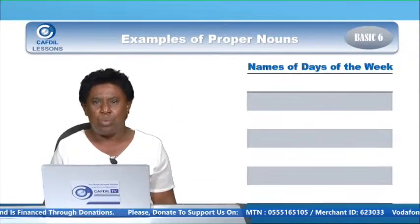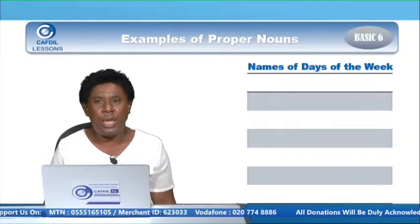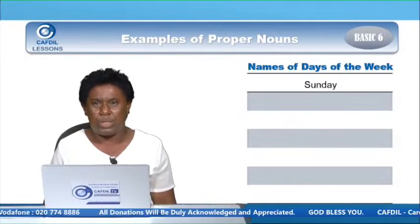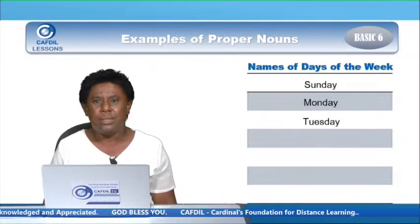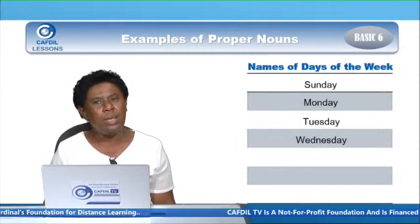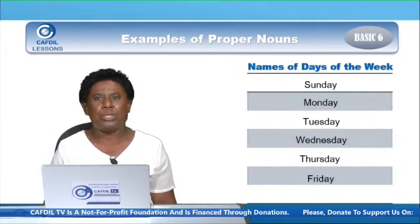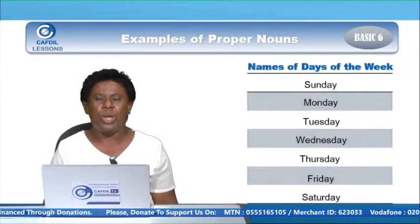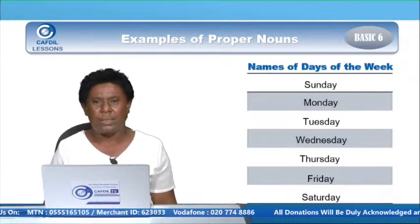Let's look at other examples — names of the days of the week. How many days do we have in a week? Seven days. And each day has a particular name. This is Sunday — a particular name given to a particular day, starts with capital S, it's a proper noun. Monday — capital M, Tuesday — capital T, Wednesday — capital W, Thursday — capital T, Friday — capital F, all particular names given to the days, and they are proper nouns. Saturday — also a name given to a particular day, starts with capital S, and it's a proper noun.